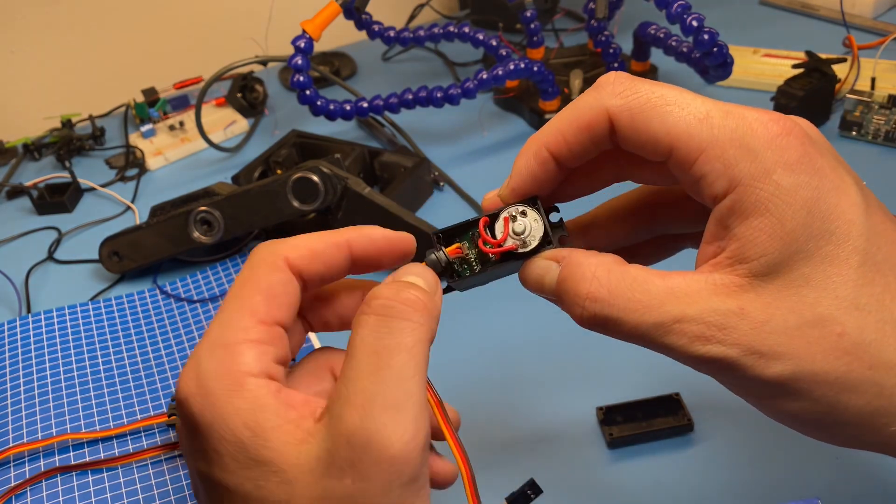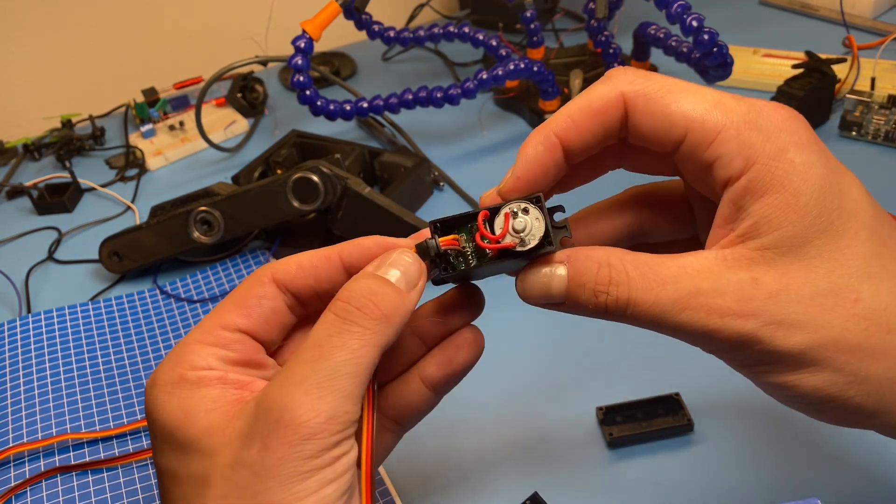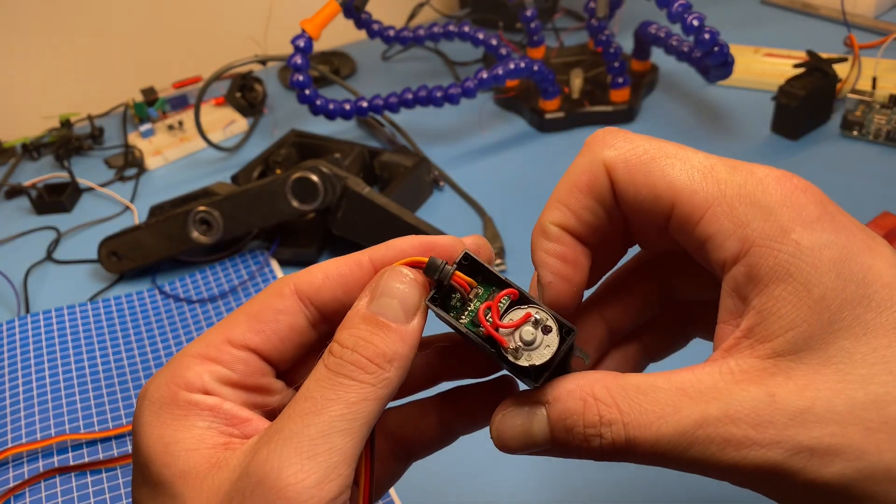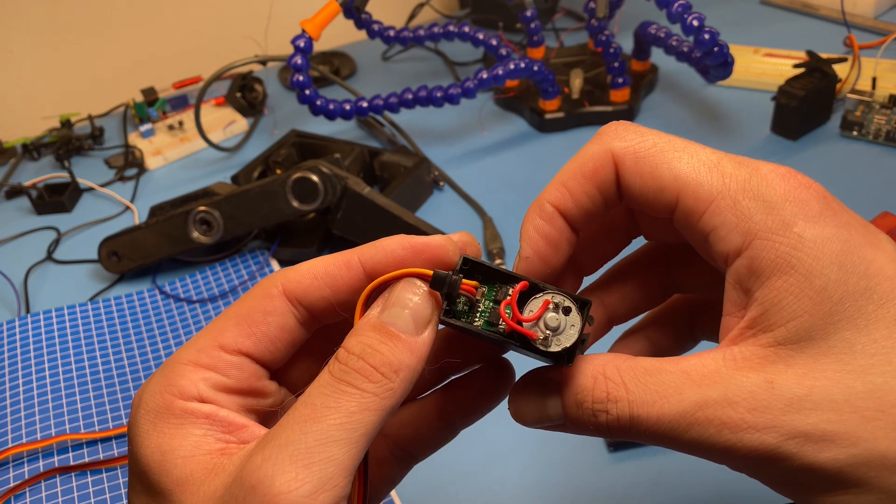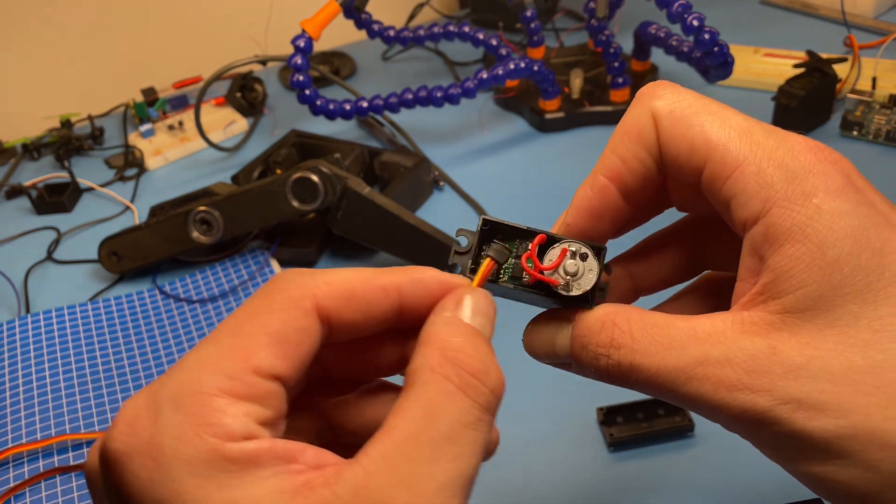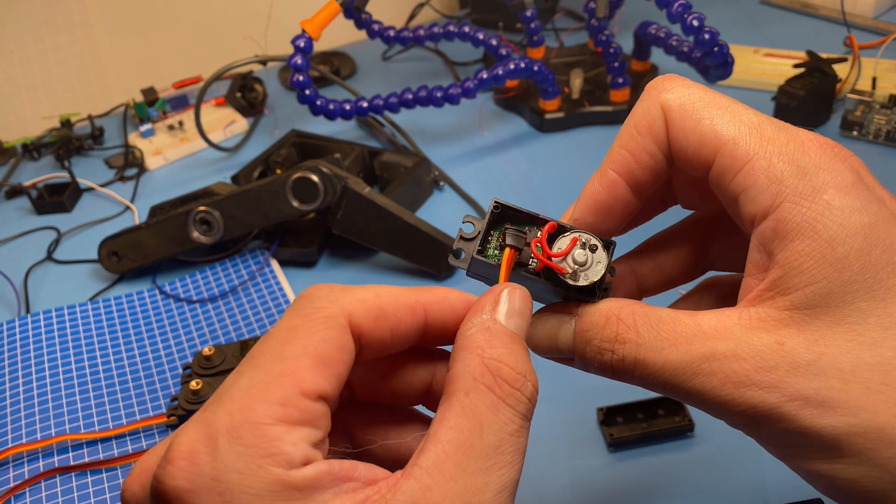All right, so now that we're inside we can take a look at the little circuit board in there and I'll get a close-up shot of that and we can start poking around after we supply some power to it and try to figure out where the signal is that we want to pull out of this.